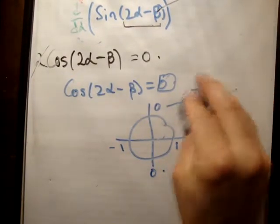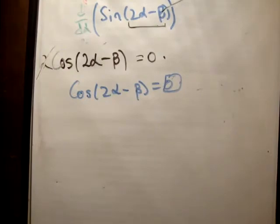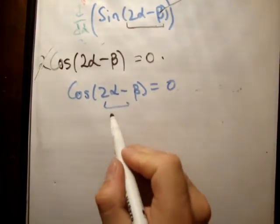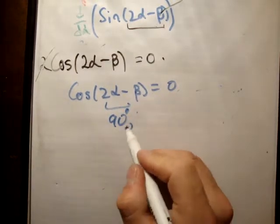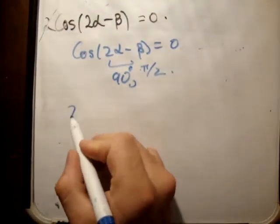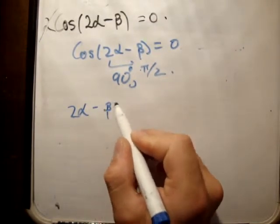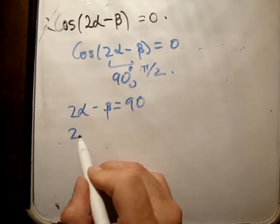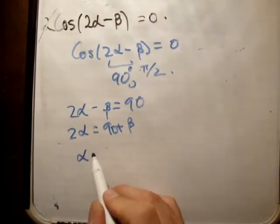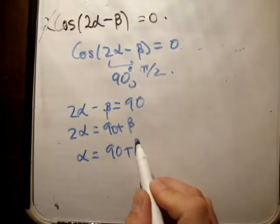So how we do this, we say that in order for this to be equal to zero, as we want it to be, this here must be equal to 90 degrees, or pi over 2. Which is the same thing. So 2 alpha minus beta is equal to 90. 2 alpha is equal to 90 plus beta. Alpha is equal to 90 plus beta over 2.